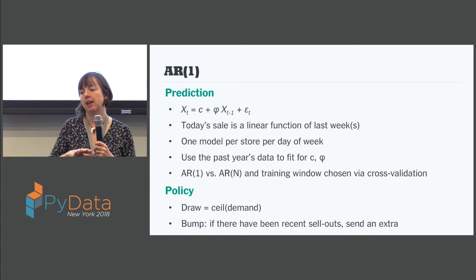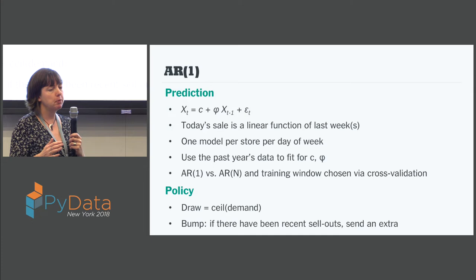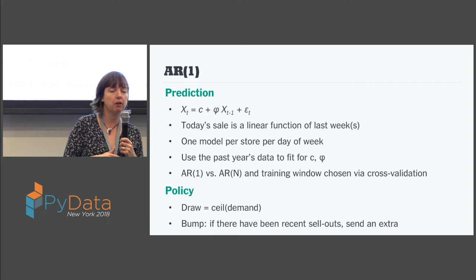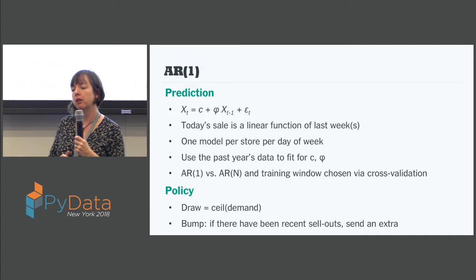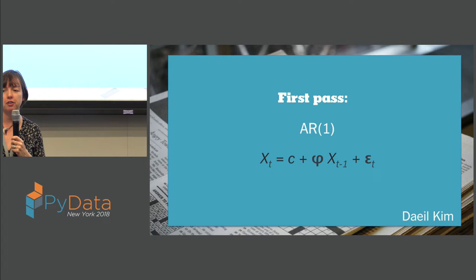We use about a year's worth of data to fit for the parameters C and phi, and then hyperparameters for the model — like the training window of around a year, or what lag to use for the autoregressive model — were chosen via cross-validation when we were developing this model in the first place. I should mention that this was really developed by Dale Kim, who is no longer at the Times, but I want to call out the people who actually built this stuff since a number of us have worked on this project.